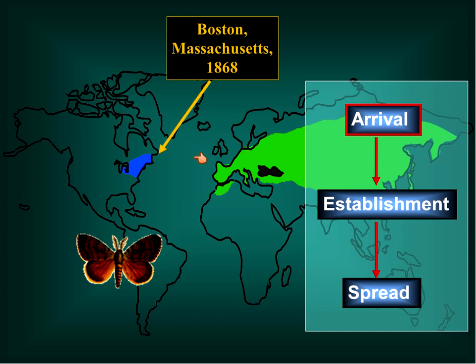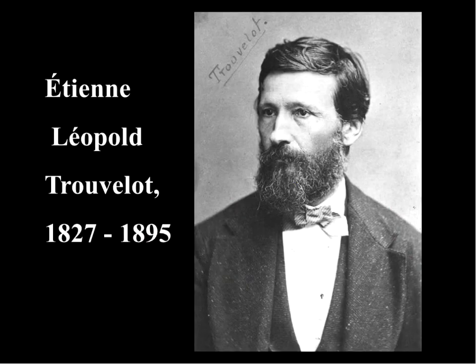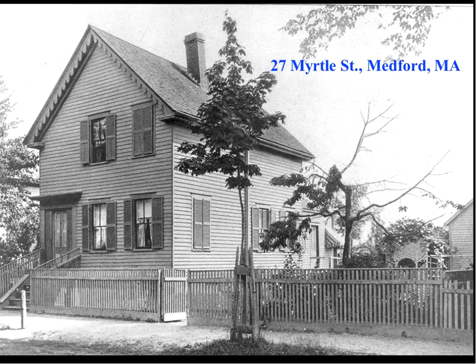The arrival stage for gypsy moth really started in either 1868 or 1869 near Boston, Massachusetts. In contrast to a lot of other non-native species where we have only a vague idea how they got there, with gypsy moth we pretty much know exactly how it got there and exactly whose fault it was. It was this guy Étienne Léopold Trouvelot. At the time of his gypsy moth accident he was a commercial artist living in the suburb of Medford. You'll hear people say he wanted to use the gypsy moth to cross it with native silkworms to produce silk.